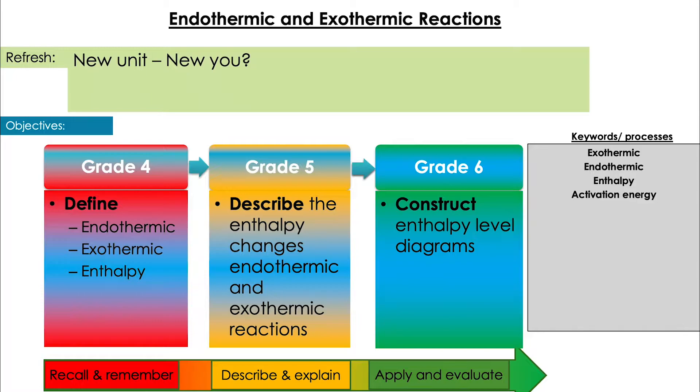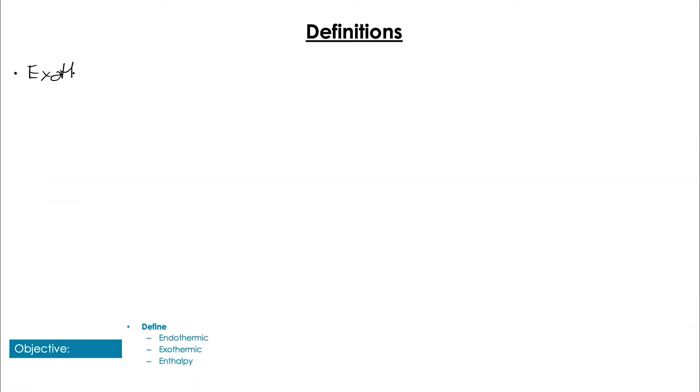Firstly, we're going to look at a few definitions to get us started. So firstly we have exothermic - exo coming from exit or exoskeleton means to give out or leave, so these reactions give out energy. Endothermic reactions are the opposite and these take in energy from their surroundings.